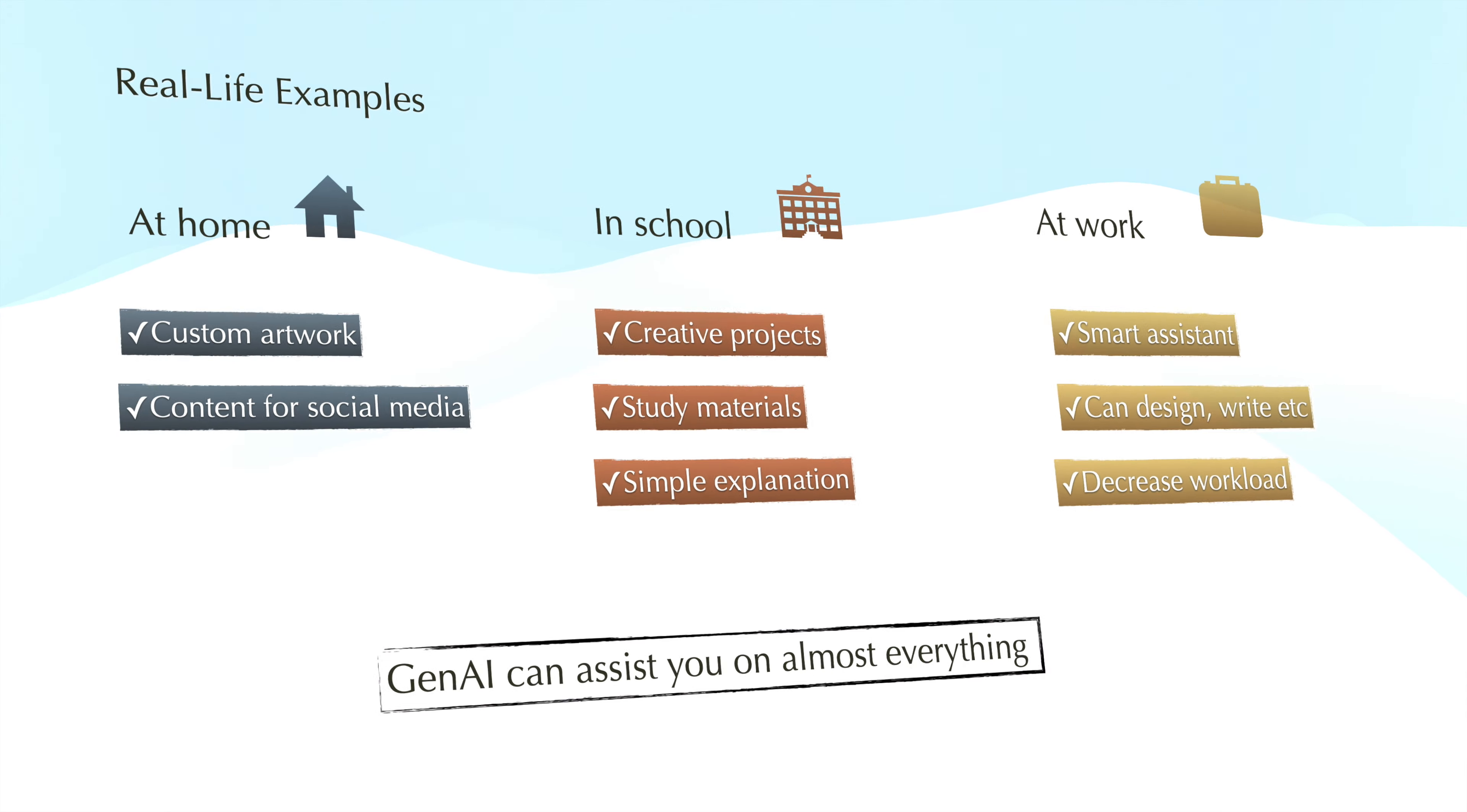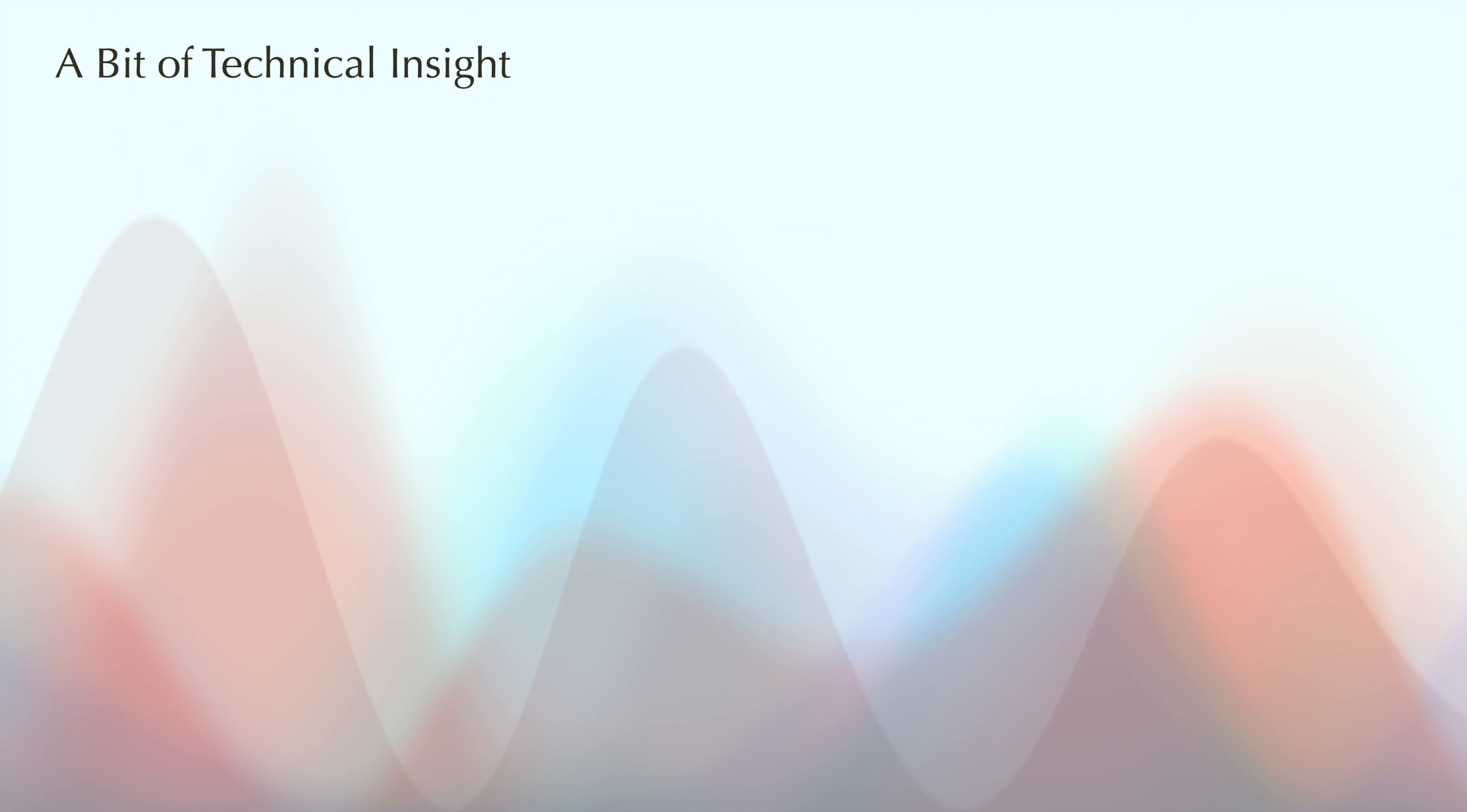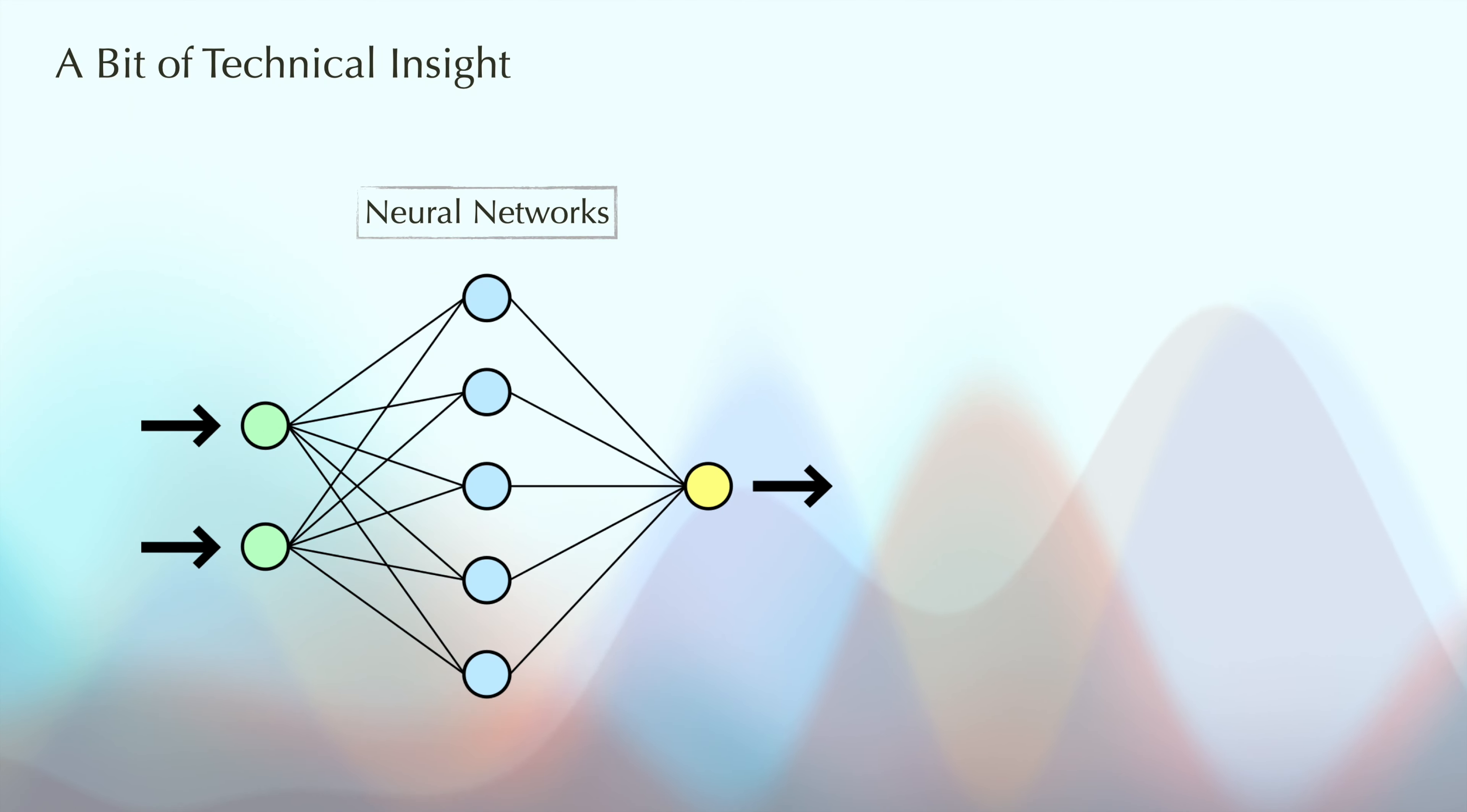Now, let's get into the technical side. Just a bit, I promise it won't get too complicated. Generative AI uses something called neural networks, which are like super smart learners. These networks can learn from a ton of examples.